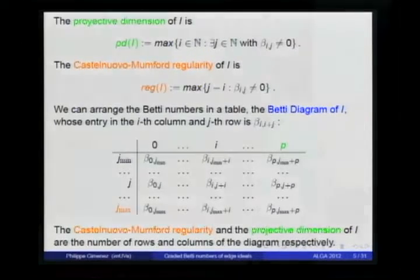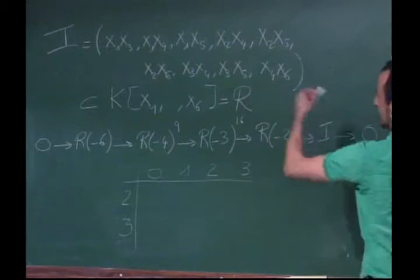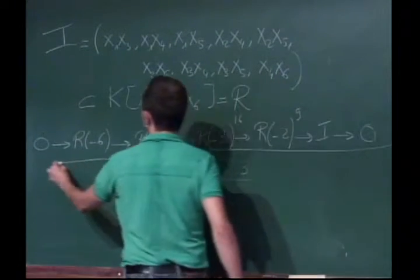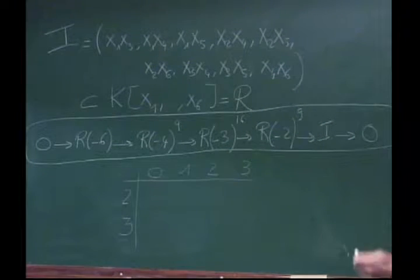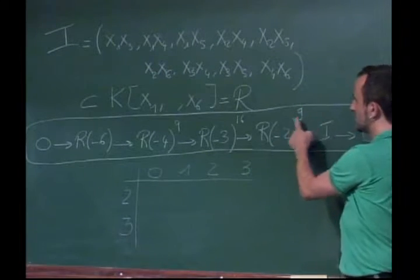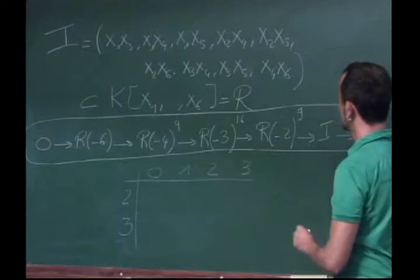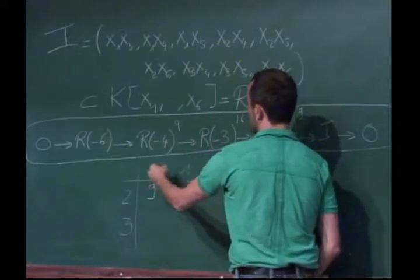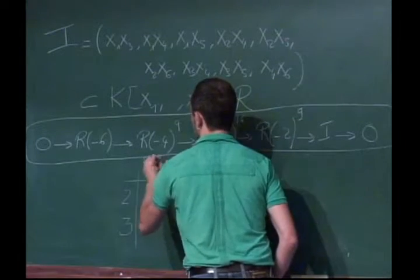Let me explain clearly how we store this numerical information with an example — a simple monomial ideal of degree 2. Its minimal graded free resolution can be computed using COCOA, Singular, or Macaulay 2. We have nine minimal generators of degree 2, so we put a 9 at the zero-th step. These are the steps and these are the degrees. Then we have 16 first syzygies of degree 3; since the minimal degree strictly increases in the resolution, we put 16 here to save space.